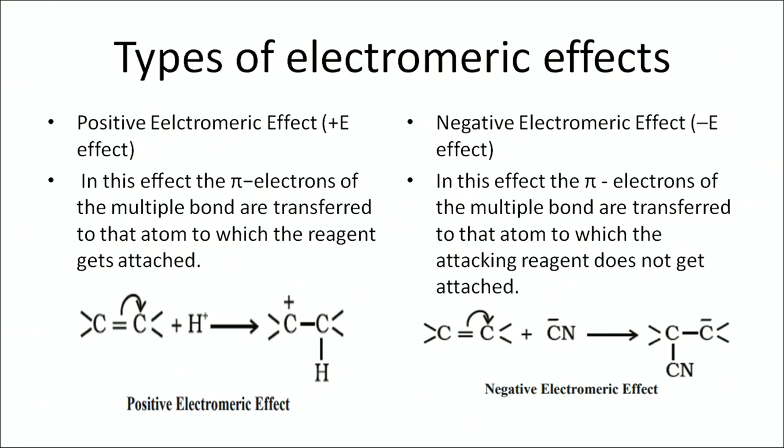For example, when you add a nucleophile such as C⁻, it will go to the carbon which is positively charged. It cannot go to the negatively charged carbon because it would show repulsion there.